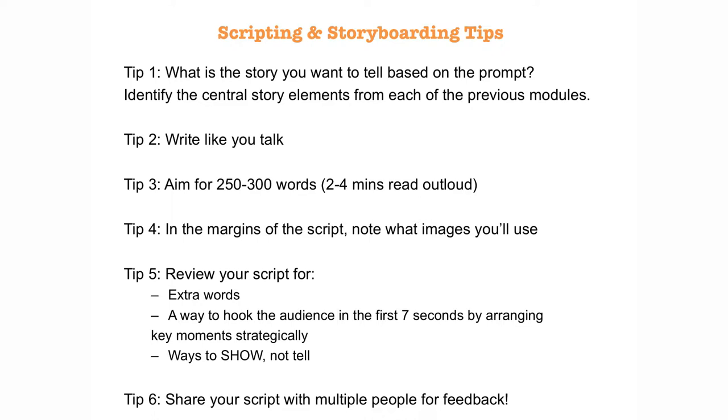Write your idea for the visual near the associated story text. Later, as you're curating your visuals, you may find a different image that's better suited. Once you've added all your images in the margins, go back through your script and look for places where your text and images might be too redundant. You can also look for places in your text that need to be beefed up a bit to do more showing. See you in the next module, where we'll look at techniques for recording your audio.